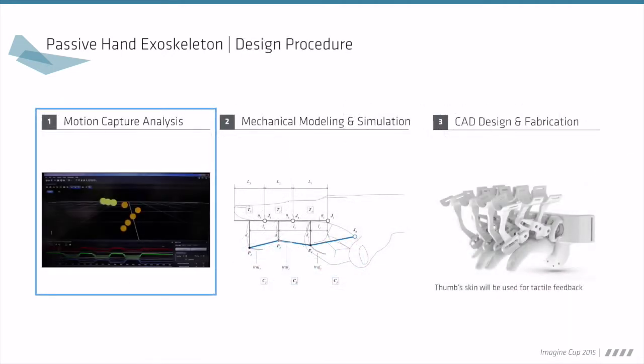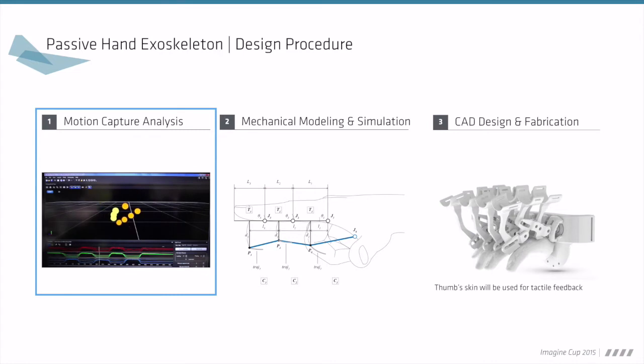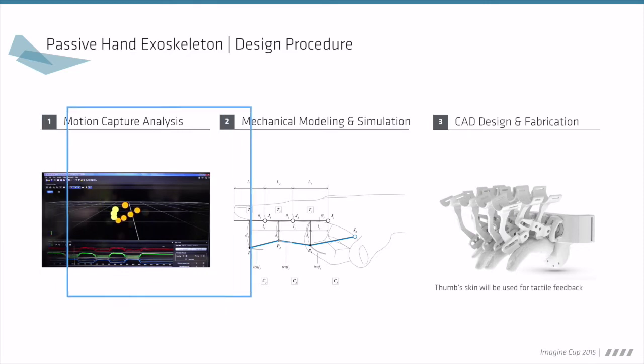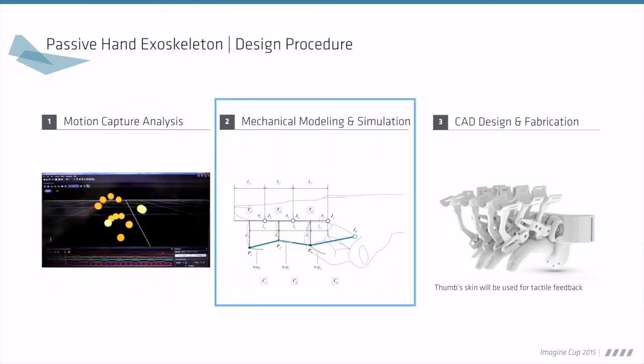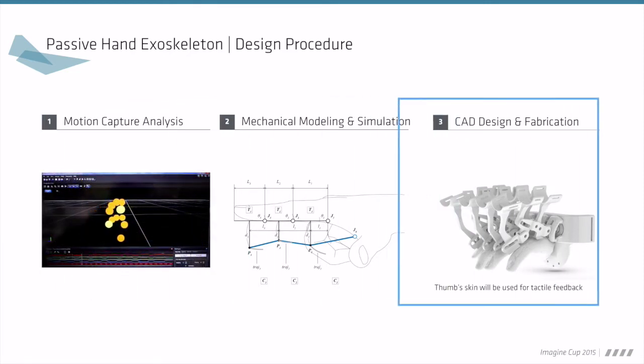This shows the design procedure of the exoskeleton. First, we analyzed finger motions using a motion capture system. Then, we designed a mechanical model and did a simulation experiment. Finally, the exoskeleton was fabricated by a 3D printer.